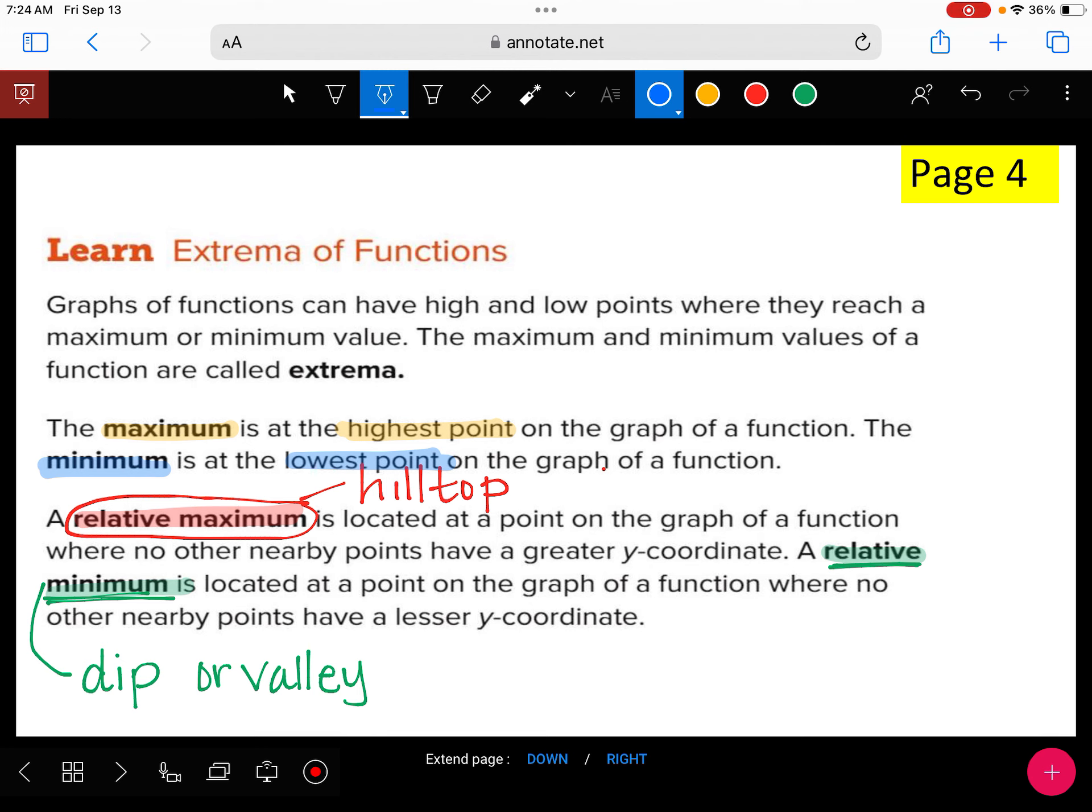And then we talk about the little ones in between. The relative max. That's your hilltop. I like to think of it as like a bump in the graph. And the relative min. That's the opposite of a hilltop, which is like a dip or a valley. All right, these are the four terms we're talking about today.